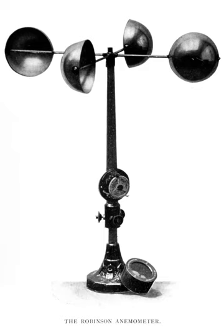Hot wire anemometers use a fine wire electrically heated to some temperature above the ambient. Air flowing past the wire cools the wire. As the electrical resistance of most metals is dependent upon the temperature of the metal — tungsten is a popular choice for hot wires — a relationship can be obtained between the resistance of the wire and the flow speed. Several ways of implementing this exist, and hot wire devices can be further classified as CCA, CVA, and CTA. The voltage output from these anemometers is the result of a circuit within the device trying to maintain a specific variable constant, following Ohm's law.